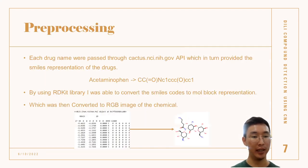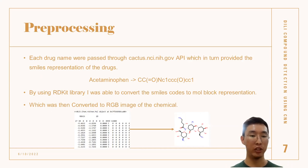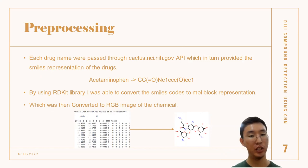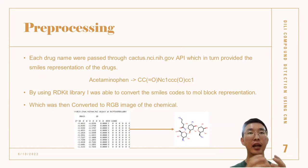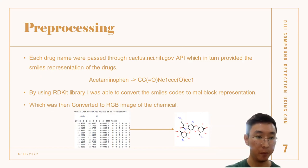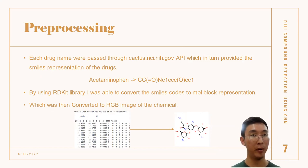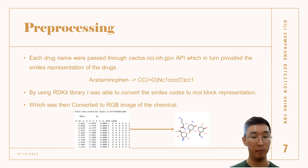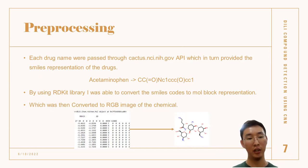Each drug name was passed through a Cactus NCI API, which provided a SMILES representation of the drug. SMILES representation is basically a letter representation of the molecular structure of that drug, as shown here. By using the RDKit library in Python, I was able to convert these SMILES codes into molecular block representations, which were then converted into RGB three-channel images of the chemical itself.